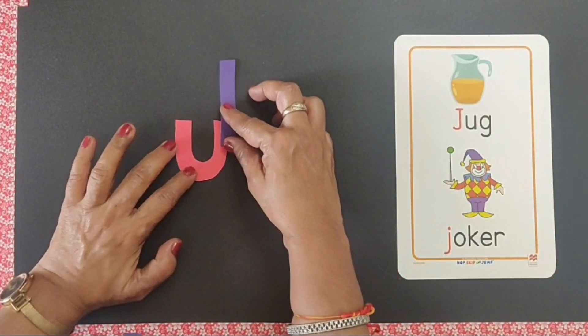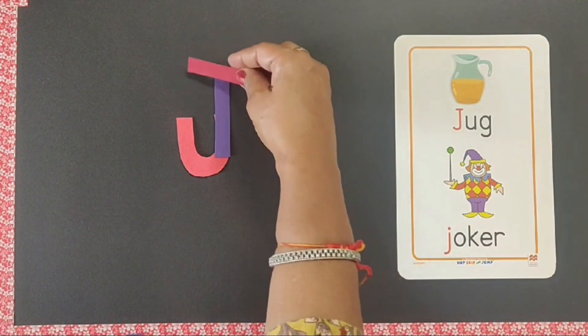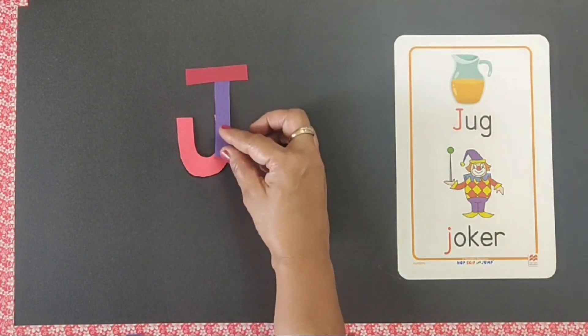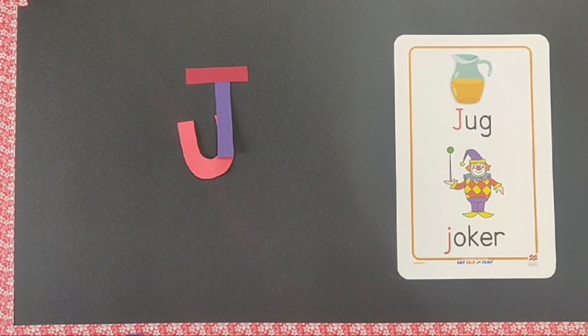You take a narrow curve, put it like this. It makes J. J says juh, J for jug.